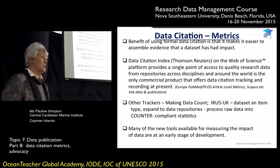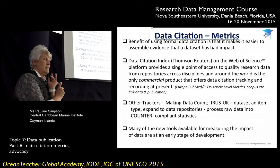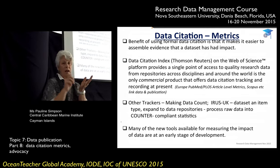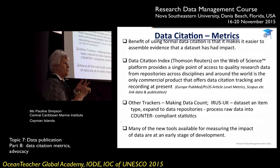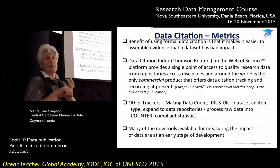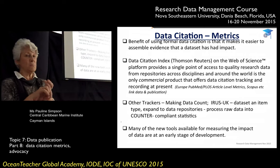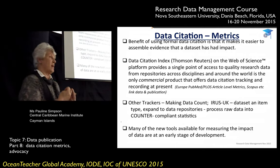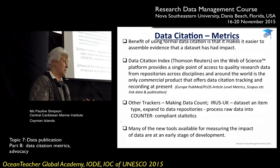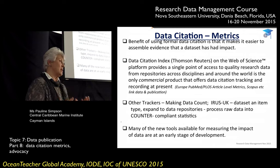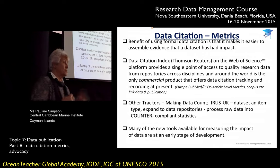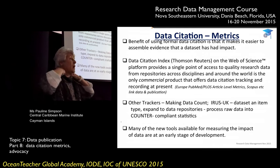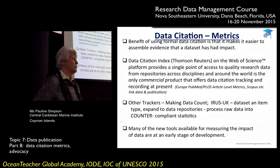Why we've been doing data citations is for creators to get credit, and in getting credit they also need to use metrics as evidence. The benefit of using formal data citation is that it makes it easier to assemble evidence of the impact that a dataset has — that's what researchers are looking for. One has to be careful about metrics, because with publication metrics you can get something cited hundreds of times simply because it was a bad article.